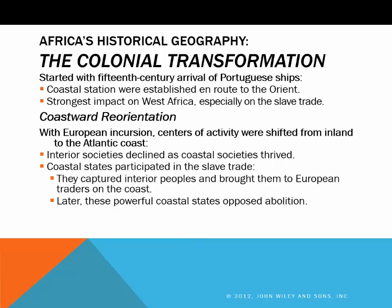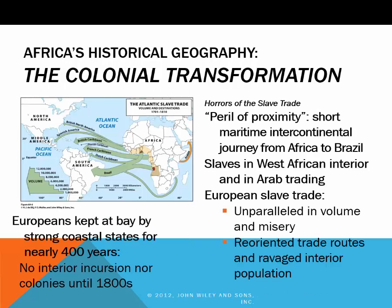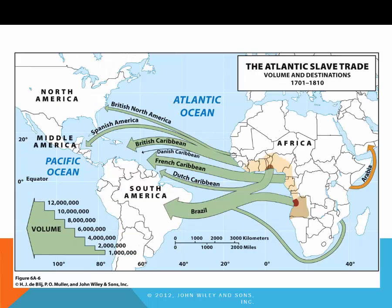The Atlantic slave trade originated in West Africa, where Europeans traded with African intermediaries for the slaves who would eventually wind up working on plantations in North, Middle, and South America. Millions of Africans were forced to leave their homelands and were sent to the US, the Caribbean basin, and Brazil. Although slavery and slave trading were not new to the continent, the European slave trade far exceeded earlier slave trade in volume, destroying families, villages, and cultures. Here in this larger map of the Atlantic slave trade, we can see the volume and destinations of the slaves, with the highest volume heading to Brazil.